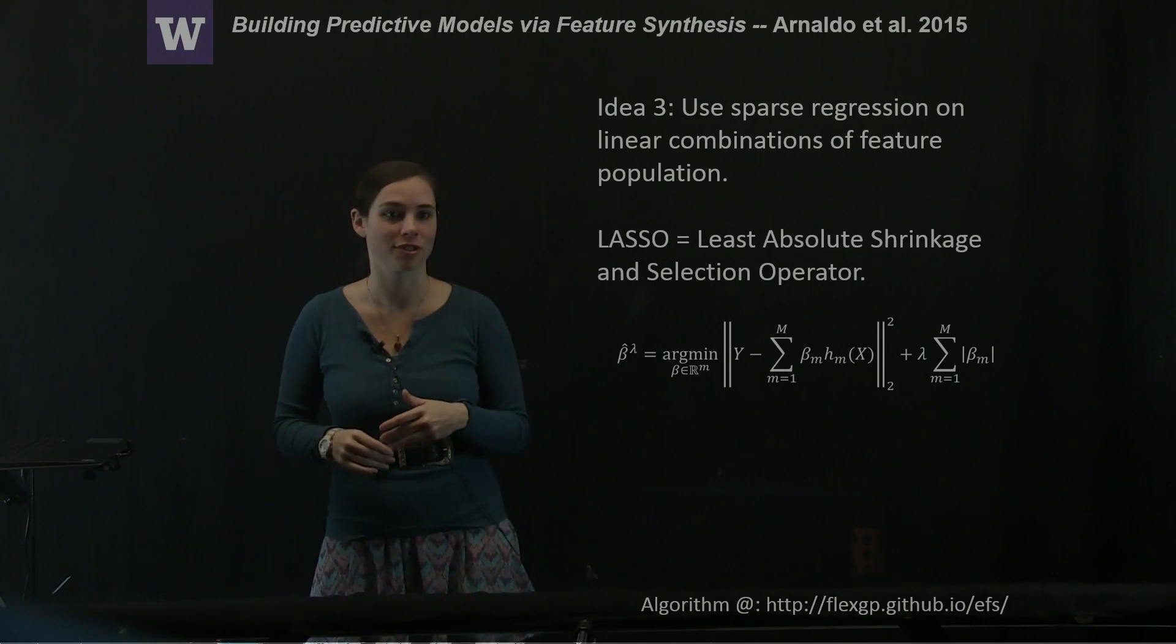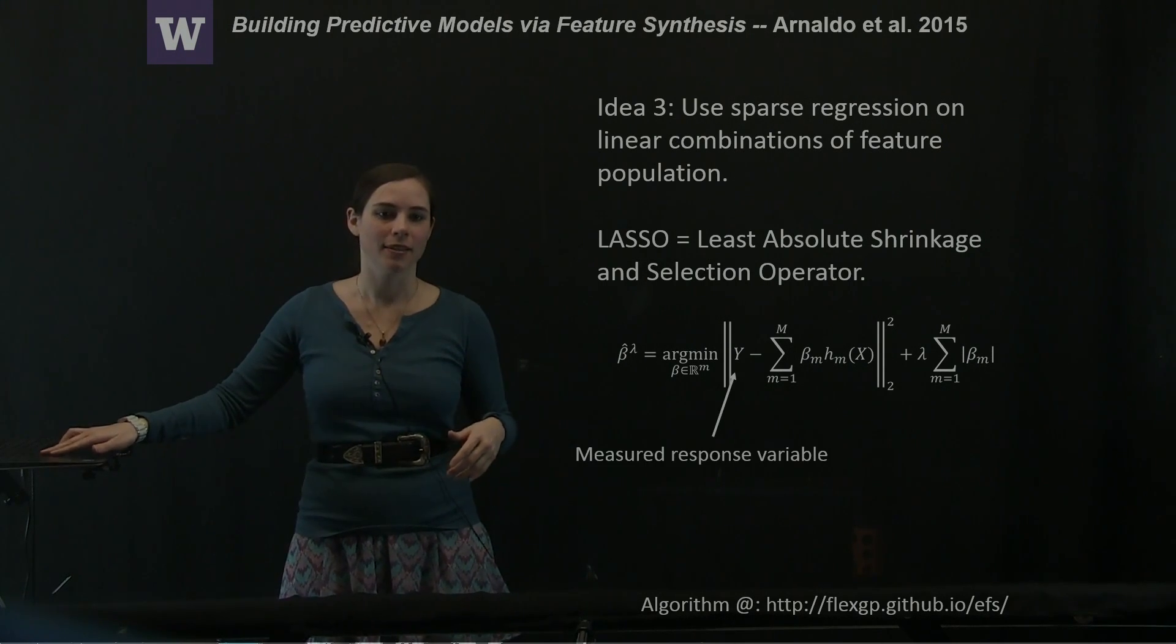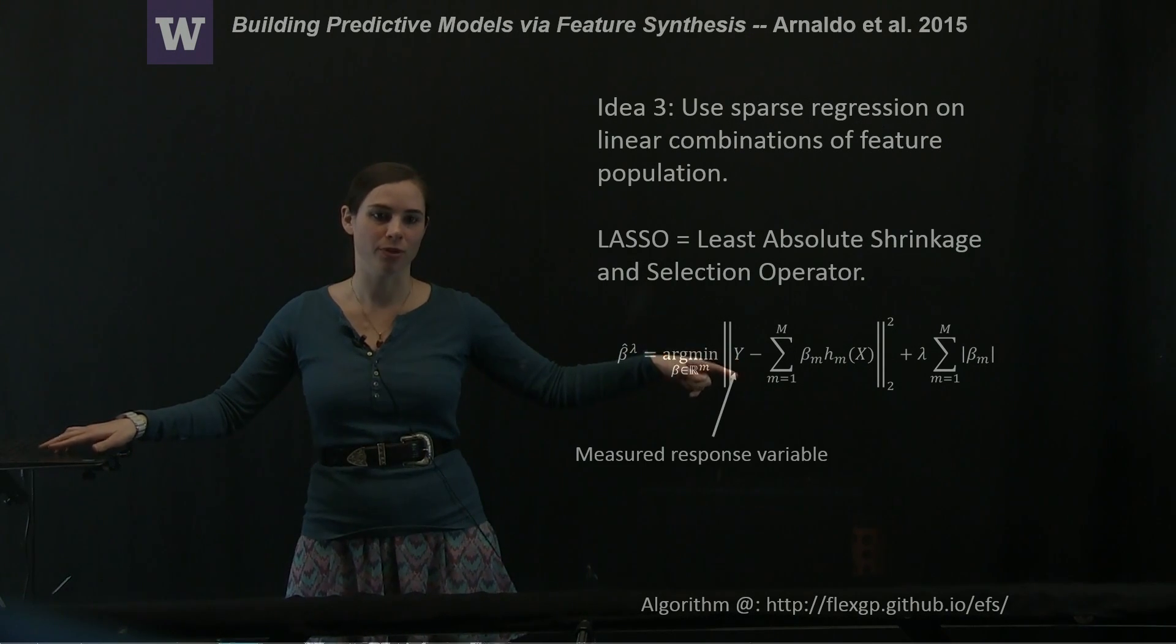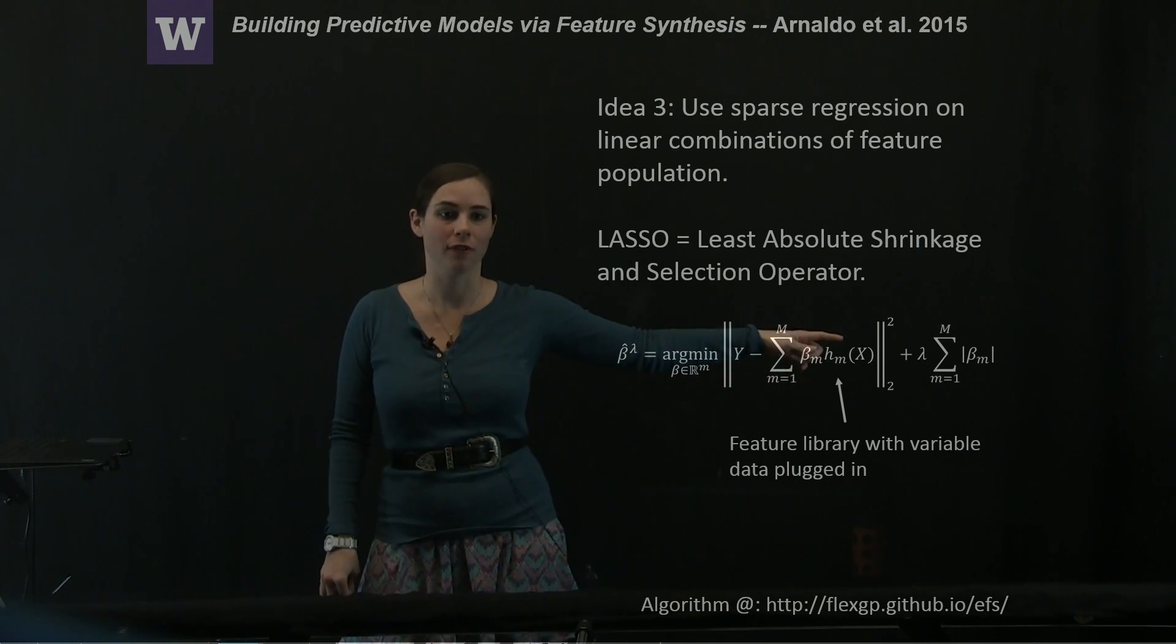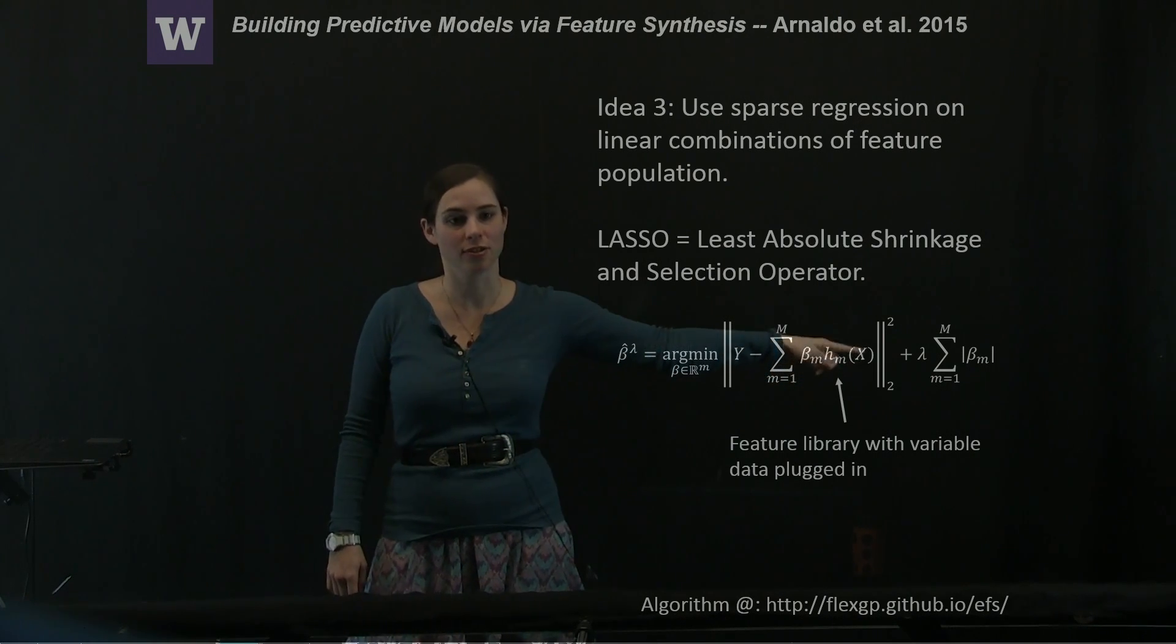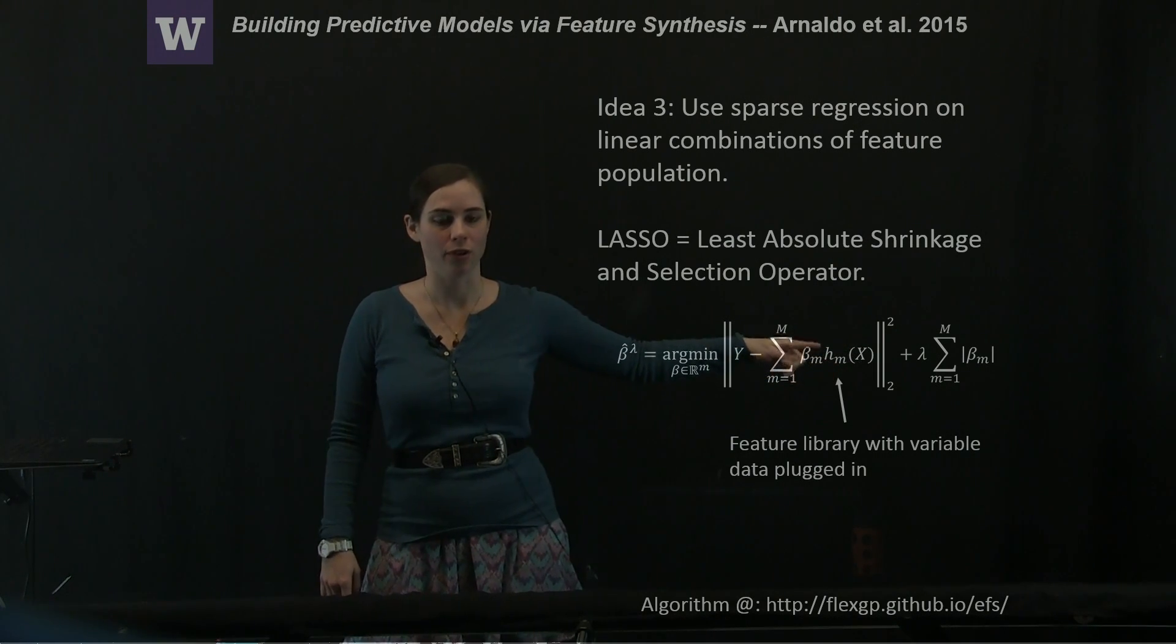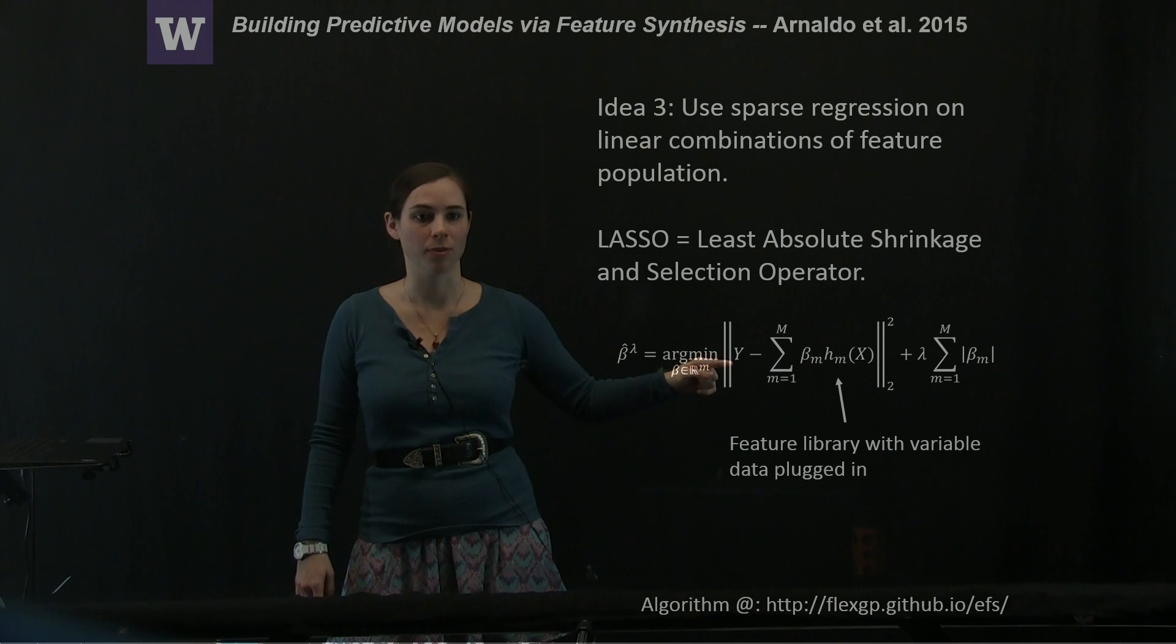Basically what this has is you are taking the difference between your measured response variables and the linear combination of your feature library with these coefficients beta. So remember this is just the features you have with the data plugged in, so this is just numbers. And this is also just numbers from your measured data.